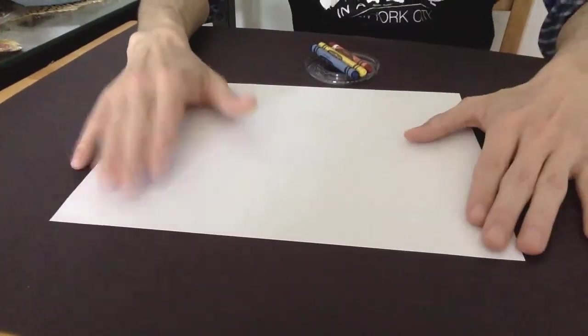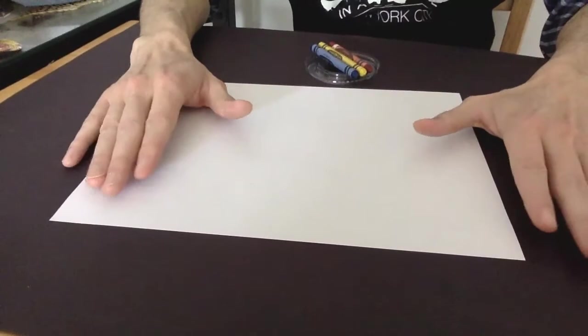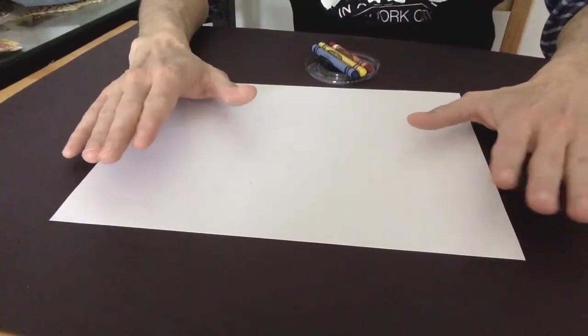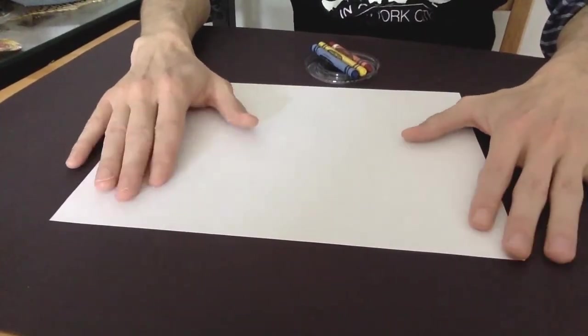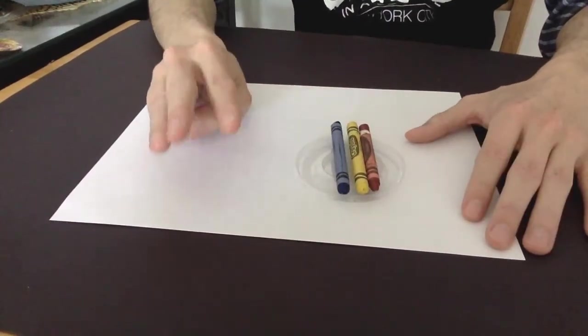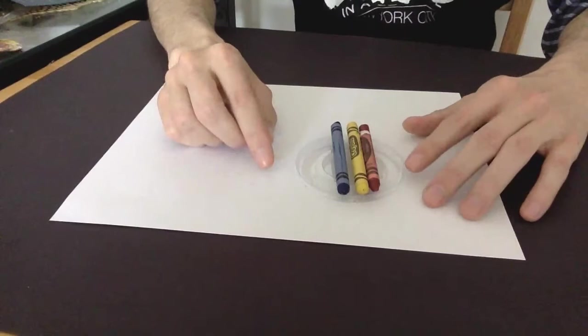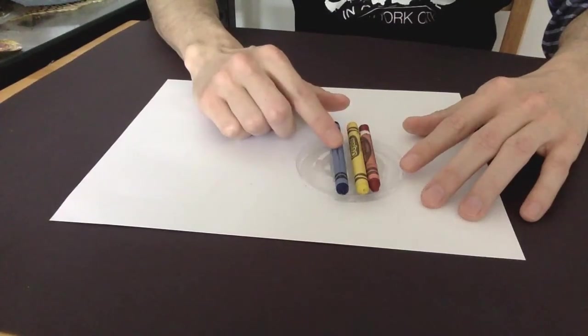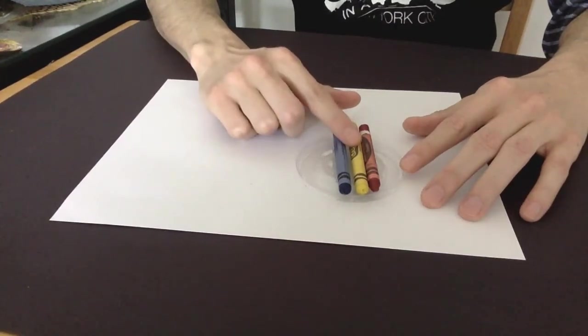And today I'm going to use this piece of paper. It's just regular copy paper and I'm going to use it as my base, my background. You will also need crayons, but only three colors. If you notice I have blue, yellow and red.